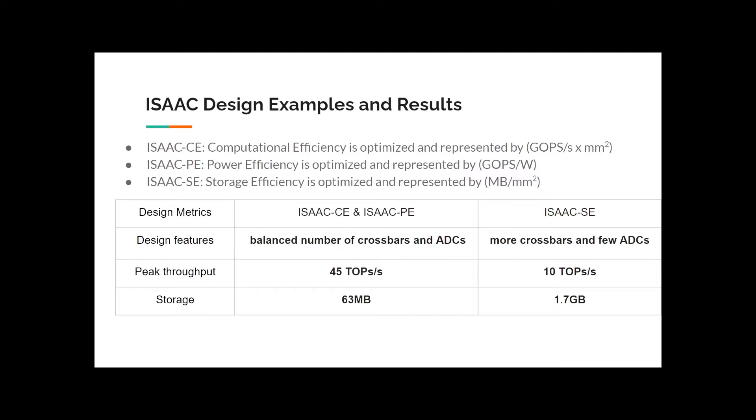For ISAC-SE, where the throughput rate is sacrificed for higher storage, it's implemented with more memristive crossbars but fewer ADCs. So if you have a very large neural network and it requires a lot more storage and crossbars, you may want to use ISAC-SE.